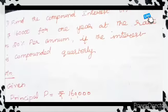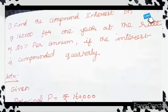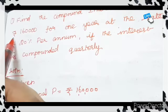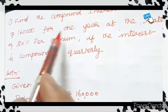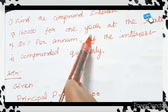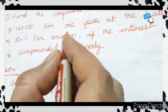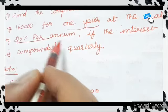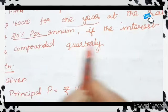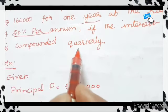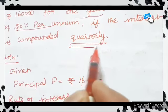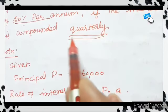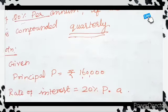One simple problem: find the compound interest on Rs. 160,000 for 1 year at the rate of 20% per annum, if the interest is compounded quarterly.